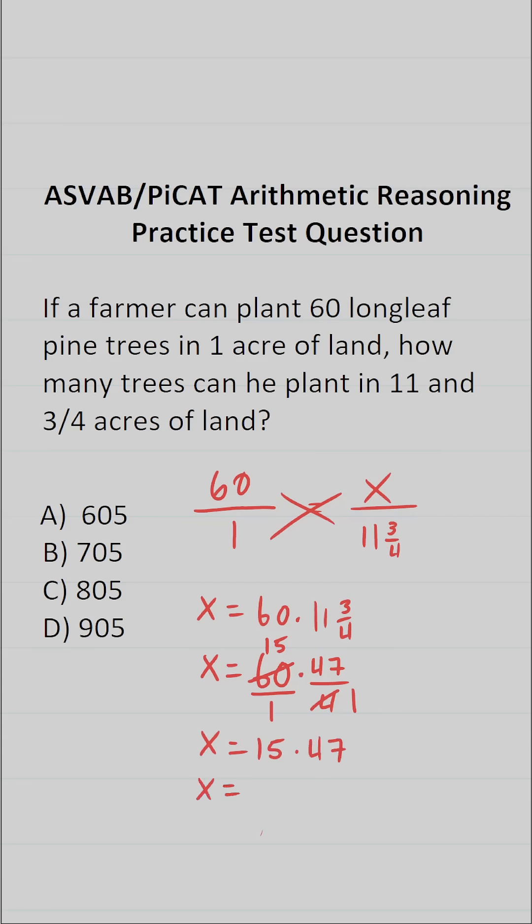So let's go ahead and work this out. This becomes 47 times 15. 7 times 5 is 35, so bring down a 5, carry a 3. 4 times 5 is 20, plus 3 is going to be 23.